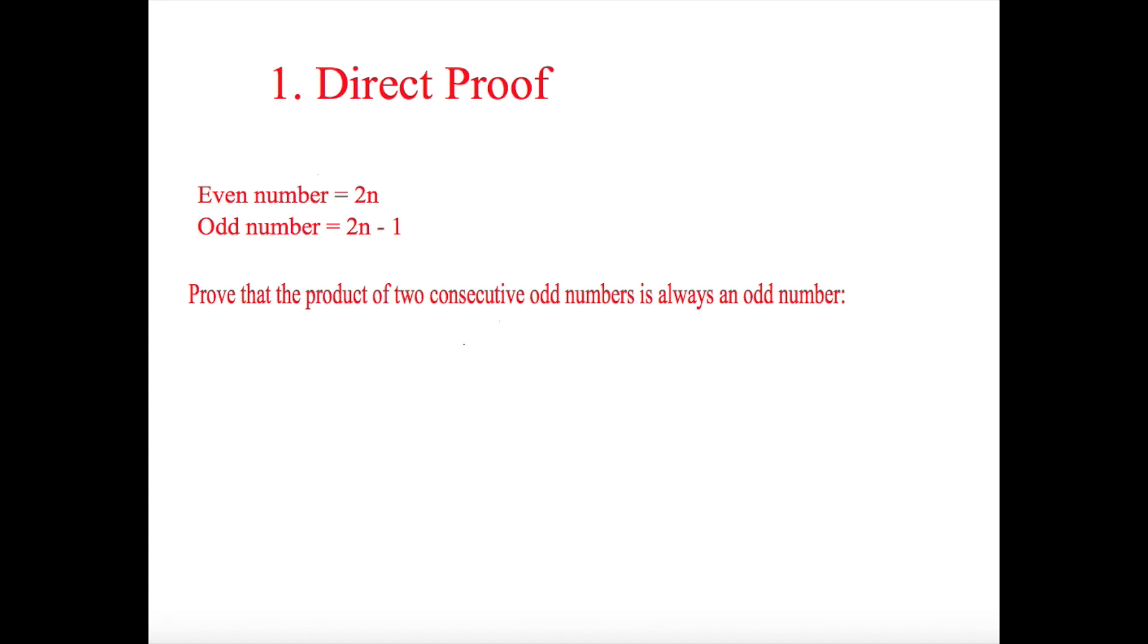What we need to talk about is direct proof, and the main two things we need to know are odd number and even number because these normally do come up in a question. An even number can be expressed as 2n, whereas an odd number can be expressed as 2n minus 1.